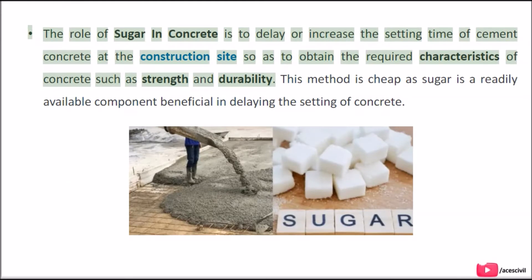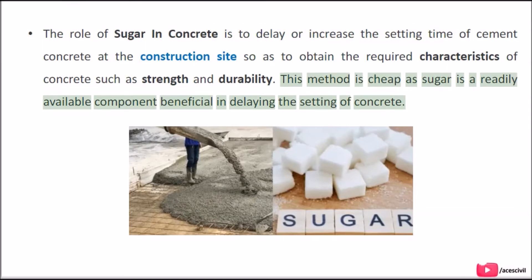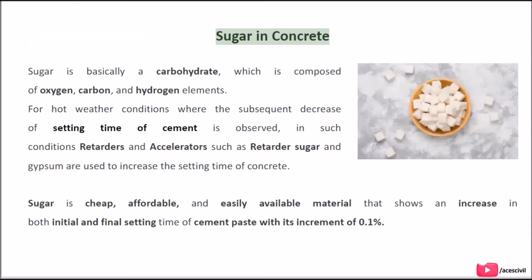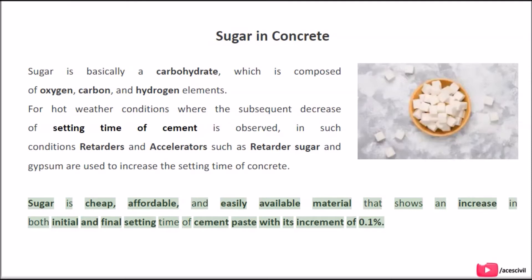The role of sugar in concrete is to delay or increase the setting time of cement concrete at the construction site so as to obtain the required characteristics of concrete such as strength and durability. This method is cheap as sugar is a readily available component beneficial in delaying the setting of concrete. Sugar is cheap, affordable, and easily available material that shows an increase in both initial and final setting time of cement paste with its increment of 0.1%.